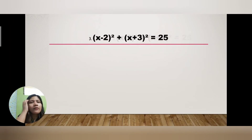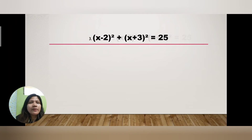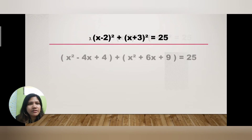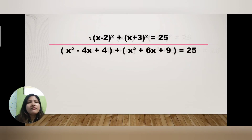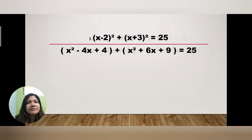Example number three: (x − 2)² + (x + 3)² = 25. Focus first on (x − 2)². Same process as example two: square the first term x — x times x is x². Then multiply the exponent 2 by x and by −2: 2 times x is 2x, times −2 is −4x, so the operation is minus, giving minus 4x.